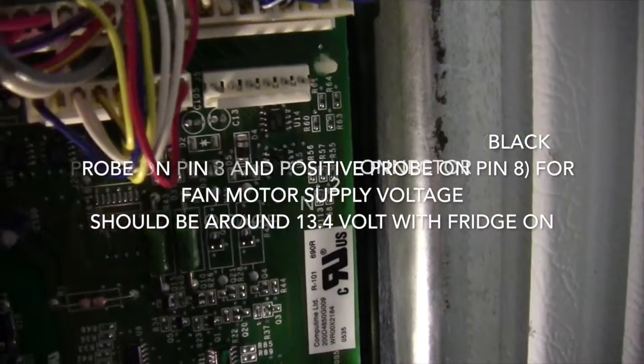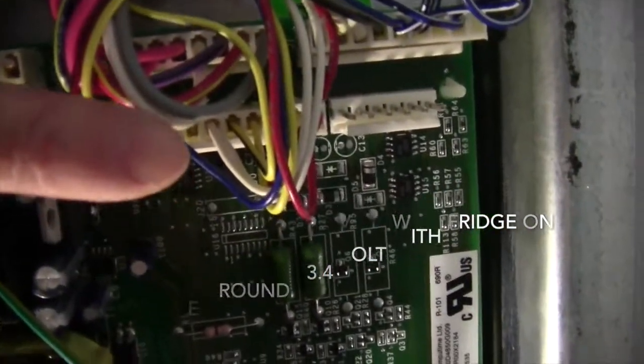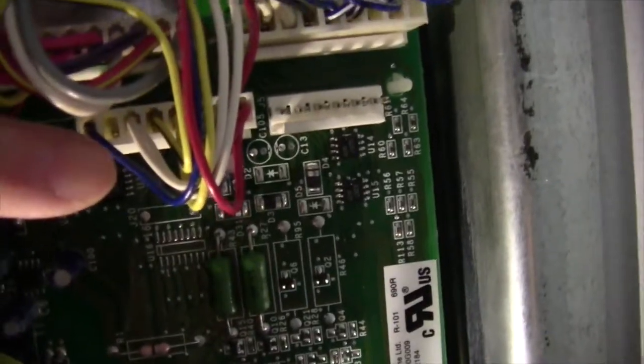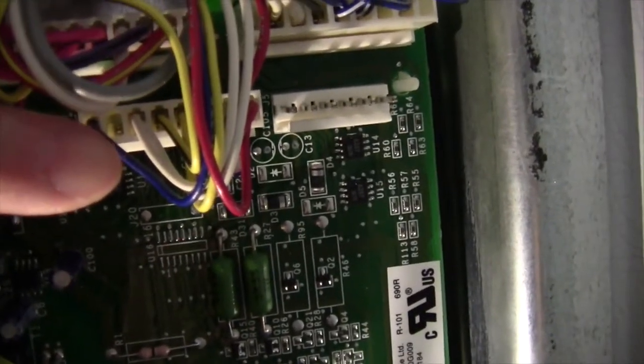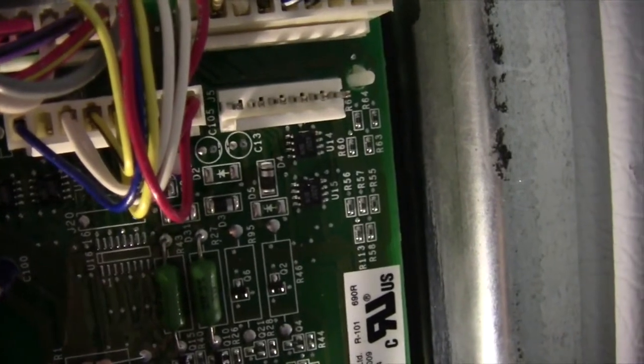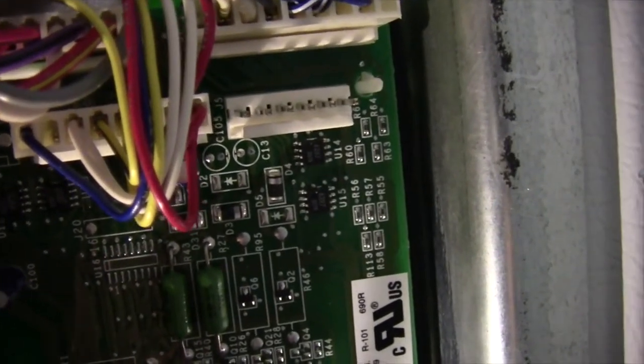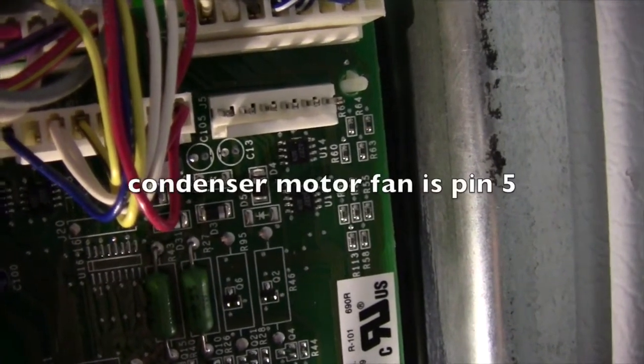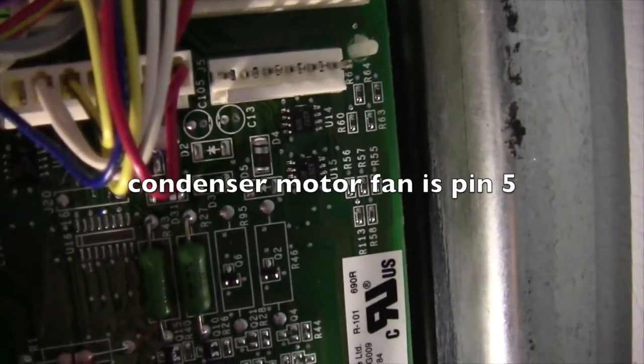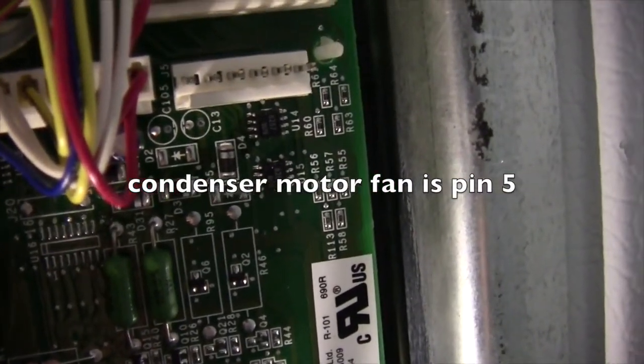The J2 common terminal is pin number three, and then four is for the evaporator fan. If you want to check for the condenser motor, this should be number five.